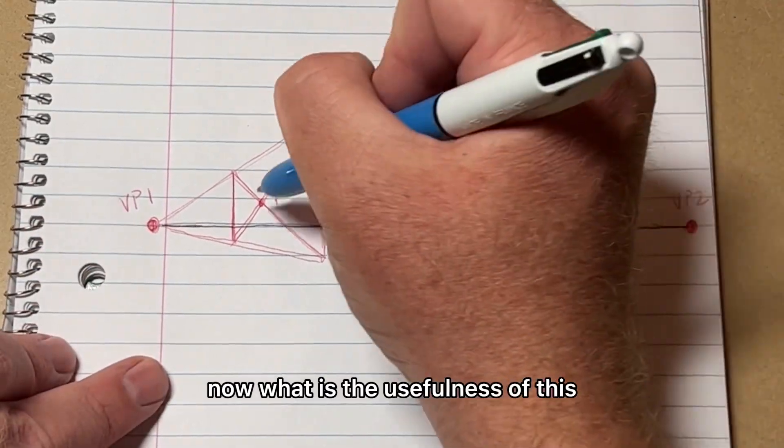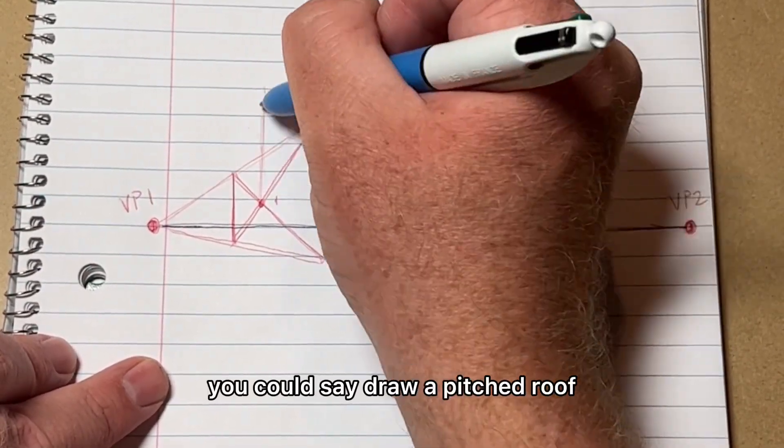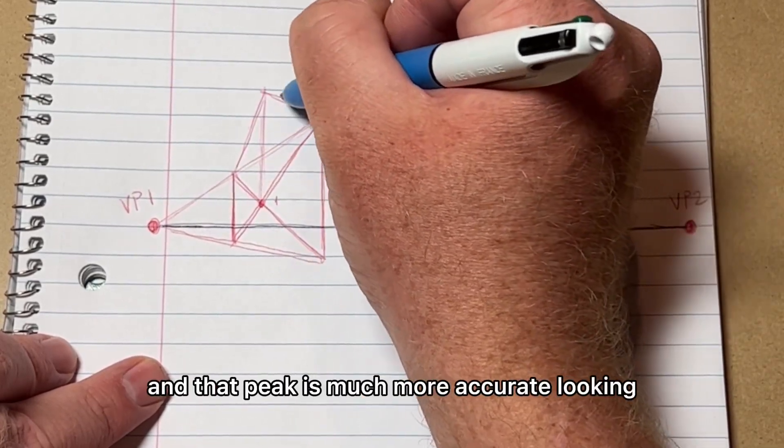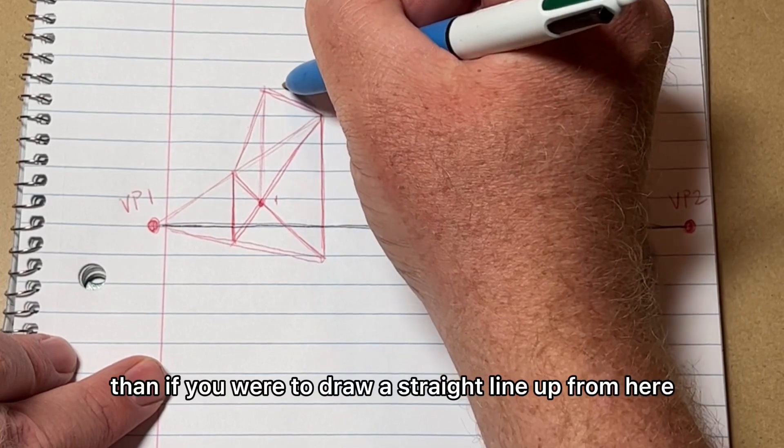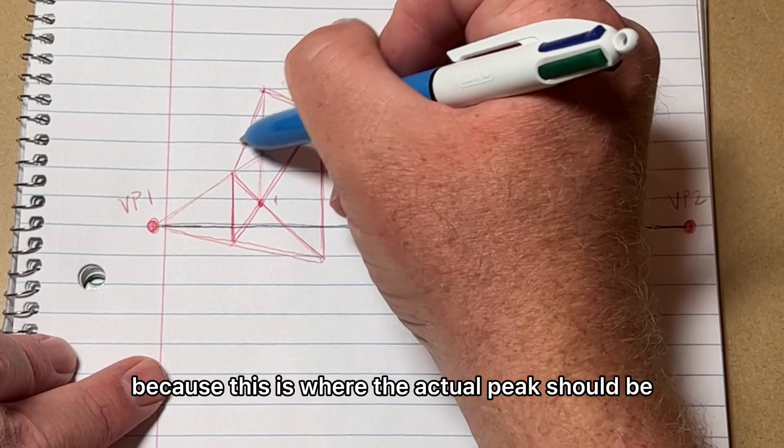Now what is the usefulness of this? Well, now that you know where the perspective center of the wall is, you could draw a pitched roof and you know where the peak is going to be. That peak is much more accurate looking than if you were to draw a straight line up from here, because this is where the actual peak should be.